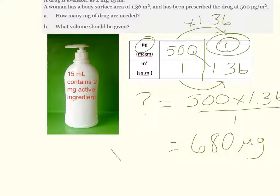Now, the drug comes as 15ml containing 2mg — that's 2mg per 15ml — so the active ingredient is given in milligrams. To set up the next part, I need to express the 680 micrograms as milligrams, or convert the 2mg per 15ml into micrograms per 15ml. As a general rule of thumb, if you change everything to the smaller unit — in this case micrograms — you have fewer decimals, more whole numbers to work with, and it's easier to judge whether your answer is reasonable.